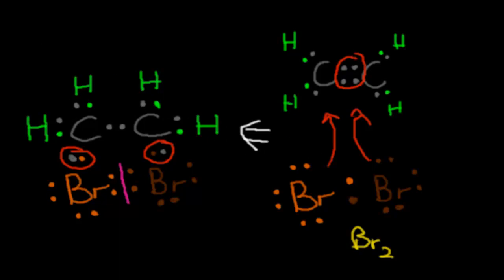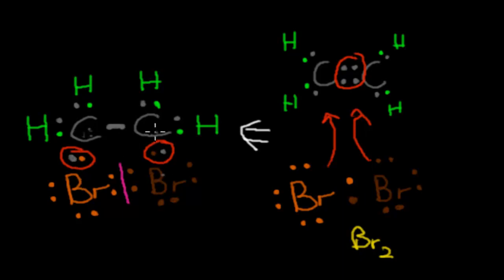It was basically an addition reaction — we added bromide to that double bond. Now the double bond is broken, we have no more double bond. One bromide attached itself and is sharing its electrons with one carbon, and the other bromide is attached to the other carbon. So this bromide is connected to this carbon, and that bromide is connected to that carbon — they found new partners.